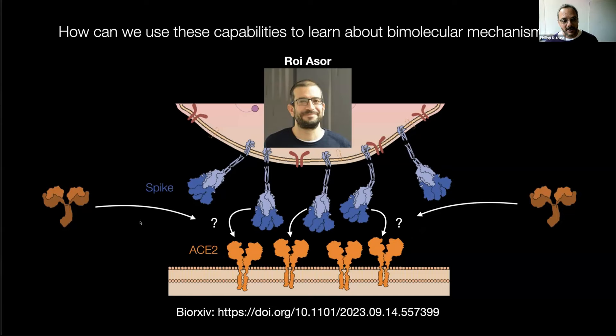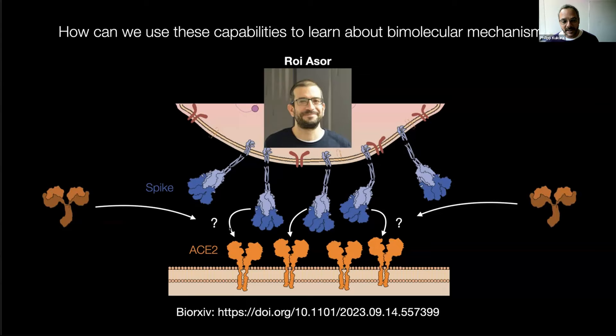If you take a vaccine, you produce these antibodies in advance so you're ready in case the virus comes. The key thing is: what is the nature of this interaction, and if you're making drugs, how do you make something that outcompetes the native interaction? If you look at the literature, you realize that we mostly live in a one-to-one interaction world. Usually people either do structural biology — getting the structure of the protein with a ligand — or run a surface-based assay that tells you about interaction strength.